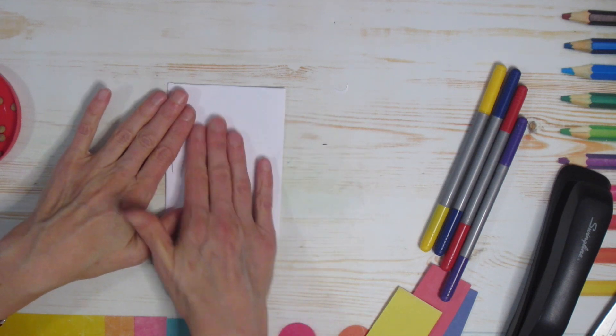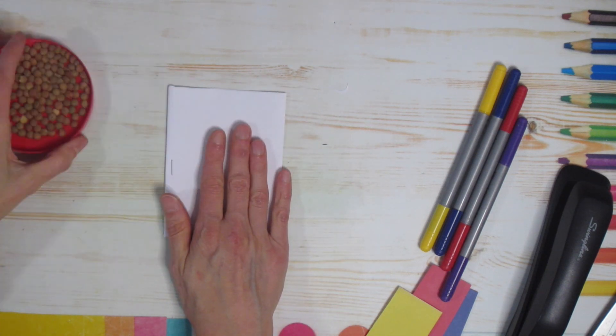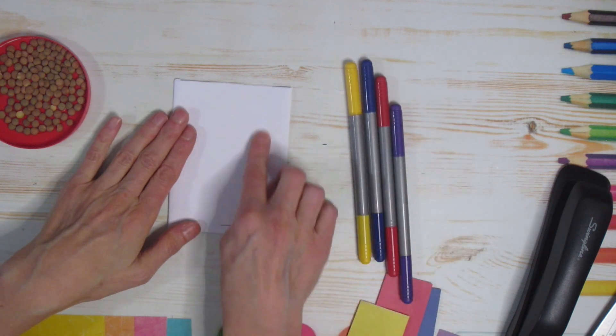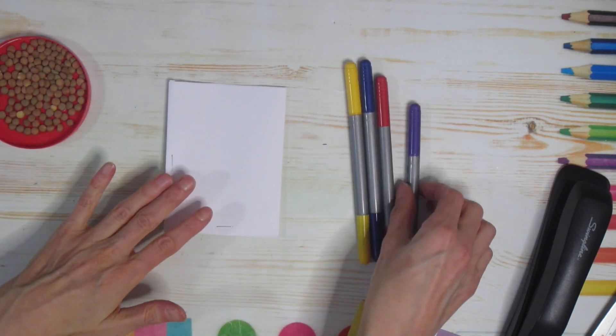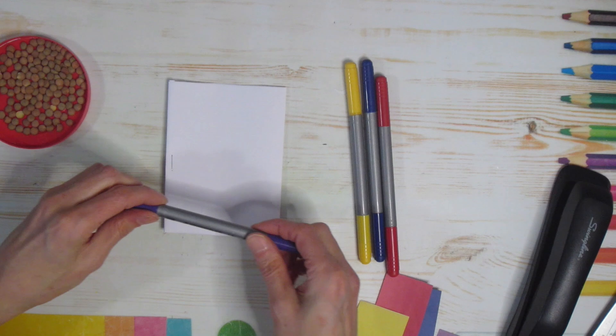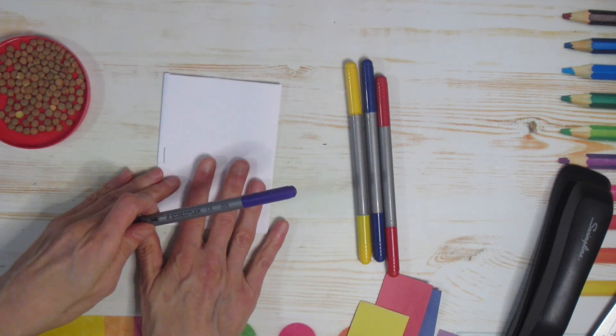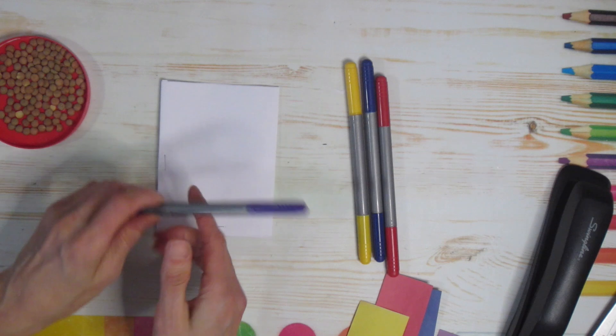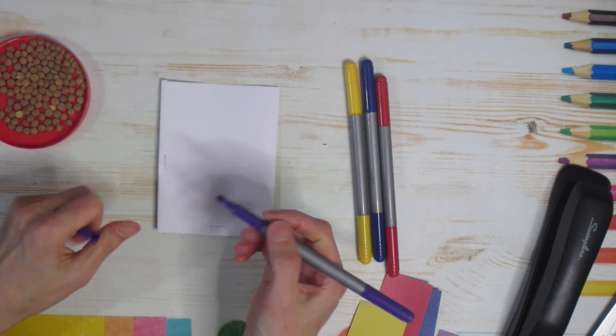Before we put our beads or my lentils in there, we're going to decorate it. So this is where we're going to write Happy New Year. You can do whatever you want. I'm going to use a variety of colors. If you want, use a pencil first so that you don't make any mistakes. It's completely up to you. Go ahead and write Happy New Year.